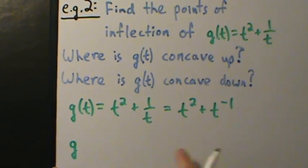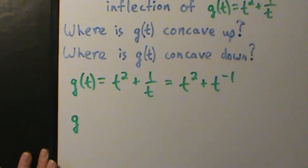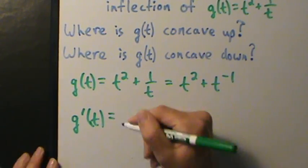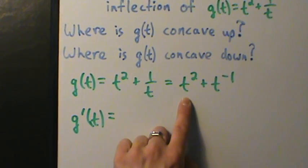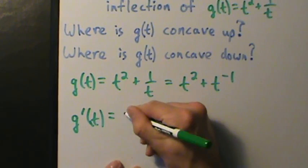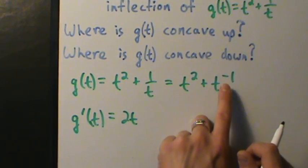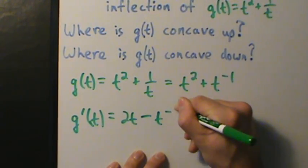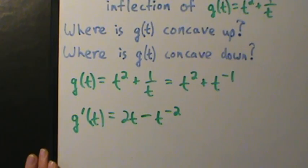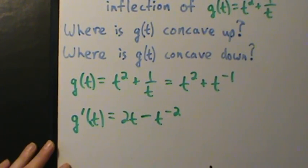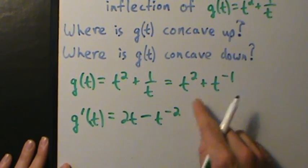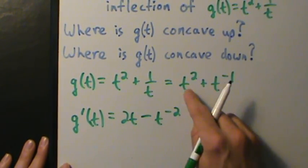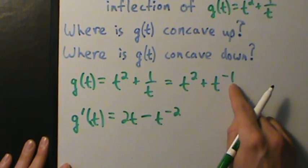If you're not comfortable with that and want to do quotient rule instead, that's totally fine — just a tiny bit more work. So g prime of t equals 2t — taking the derivative of t squared gives 2t — plus t to the negative first becomes minus t to the negative second. The exponent comes down and we subtract 1 from inside the exponent.